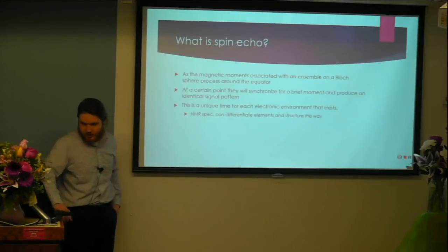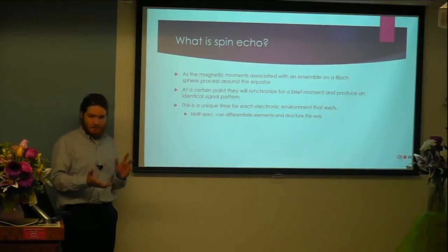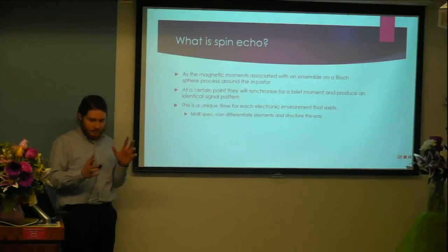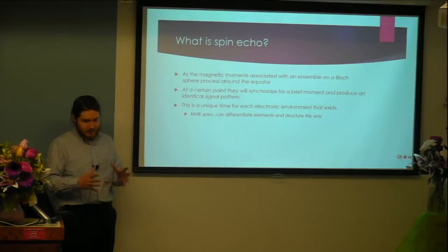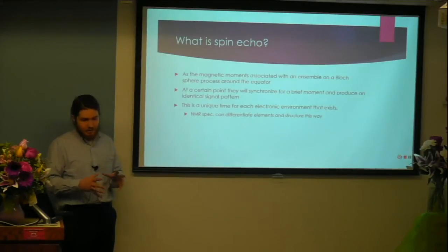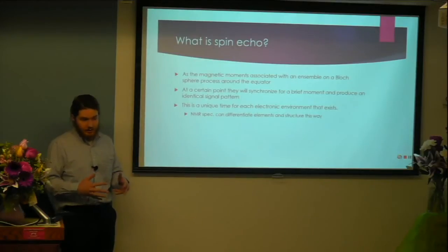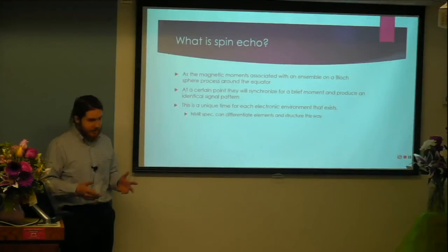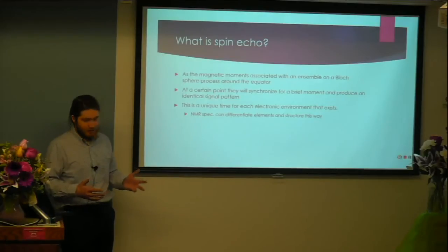What is a spin echo? As the magnetic moments of a group of electrons move around a Bloch sphere around the equator, at one point in time they will synchronize and constructively combine their signals into one very large signal. The exact time this happens for an atom is unique to each atom and electronic environment, including how it's bonded. This is the principle behind how NMR spectroscopy can differentiate elements and atomic structure.